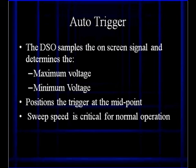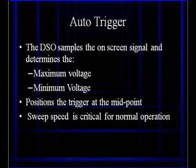Auto trigger is a good example — it works fine. The DSO samples the input, determines the maximum and minimum voltage, and positions the trigger near the midpoint. Sweep speed is critical for normal operation. Auto trigger and auto voltage only work when you have a slow enough sweep that you can get an entire pulse train of several pulses on the screen. So just because you have auto trigger engaged doesn't mean you're going to get anything if you mess up the sweep speed.